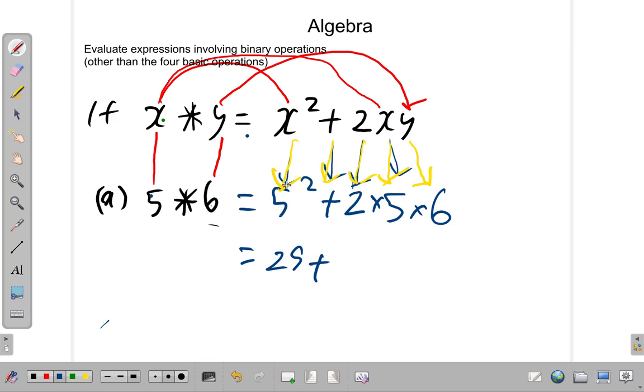Work it out now. 5 squared is 25. You bring down the X squared part, the plus sign, the 2, the X, and the Y. So, you follow the same pattern as what happens up here. Then, you work them out. 5 squared is 25, plus 2 times 5 is 10, 10 times 6 is 60. So, you put them all together and say 60 plus 25 is 85.